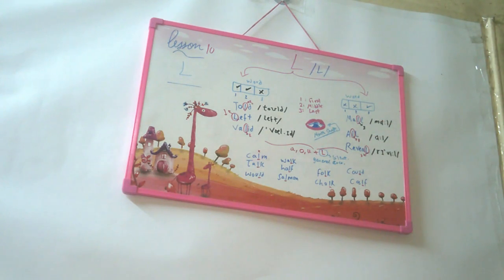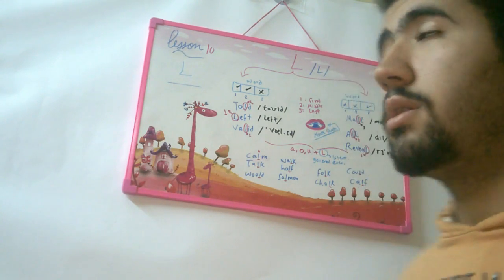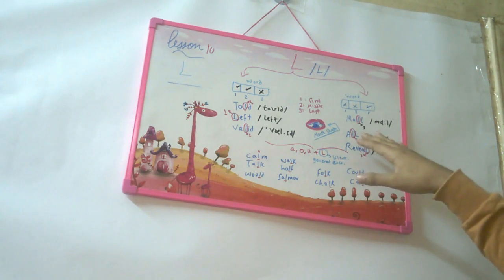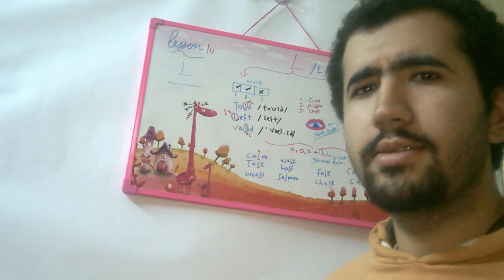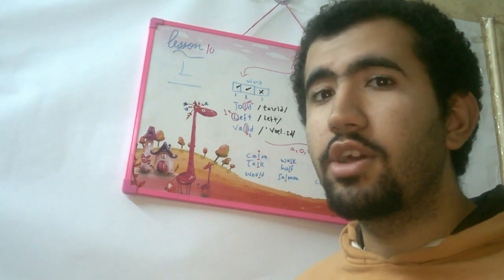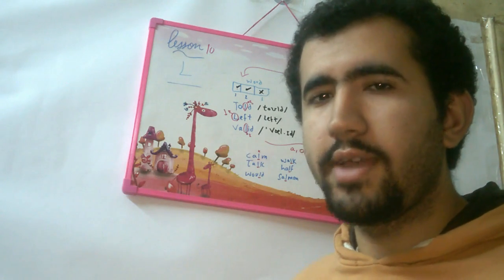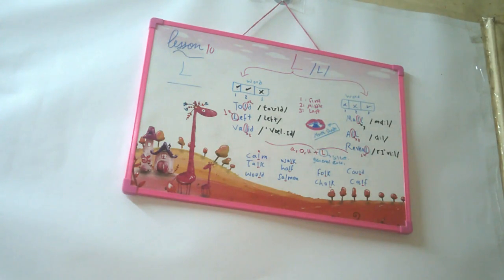It's mall. Mall. All. Reveal. Not reveal, it's reveal. And this is the second pronunciation for the L.